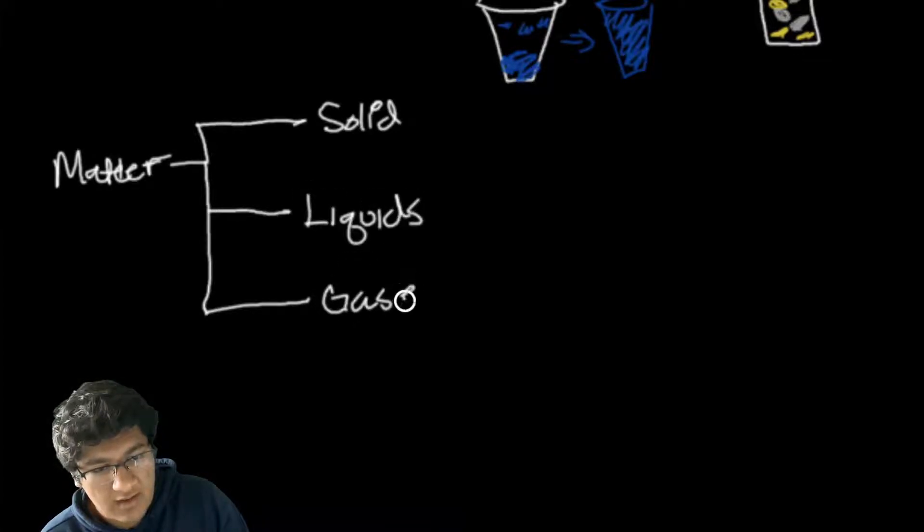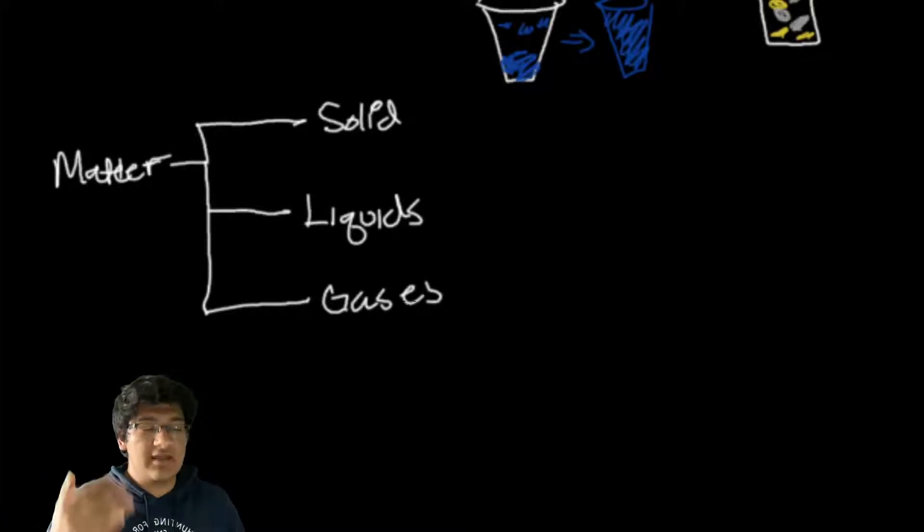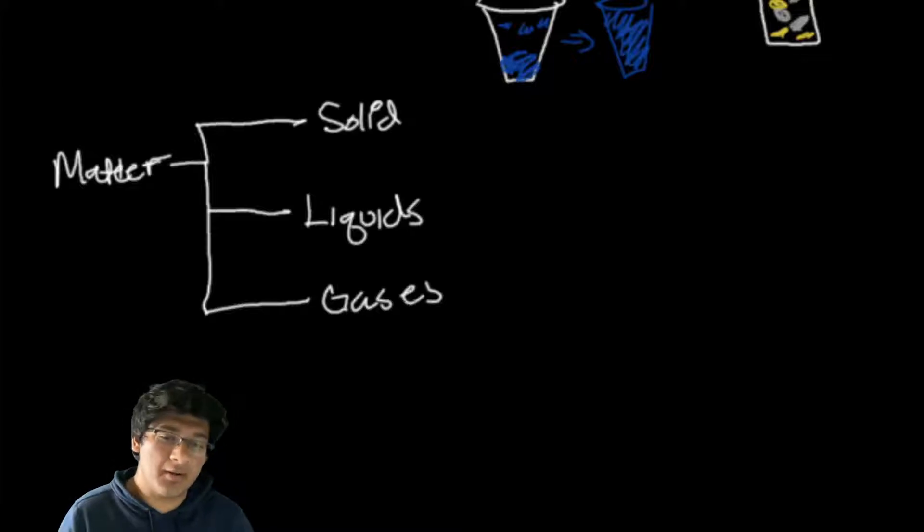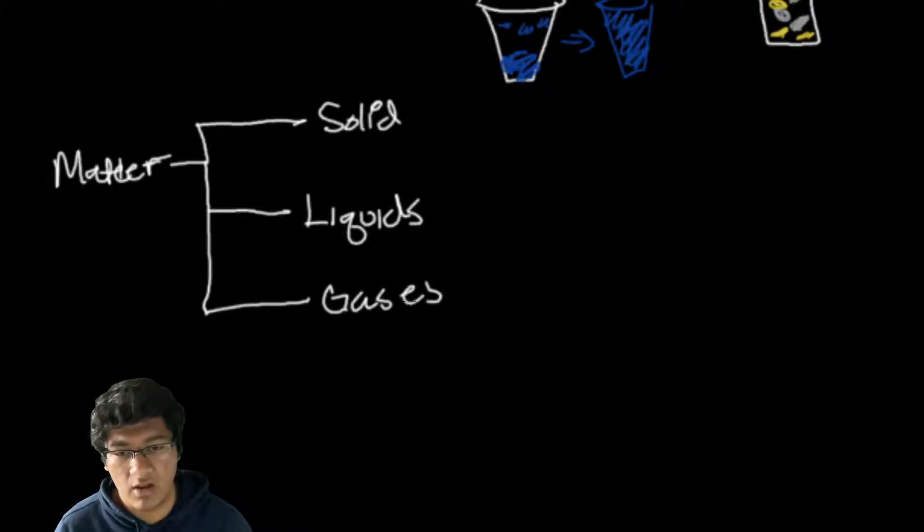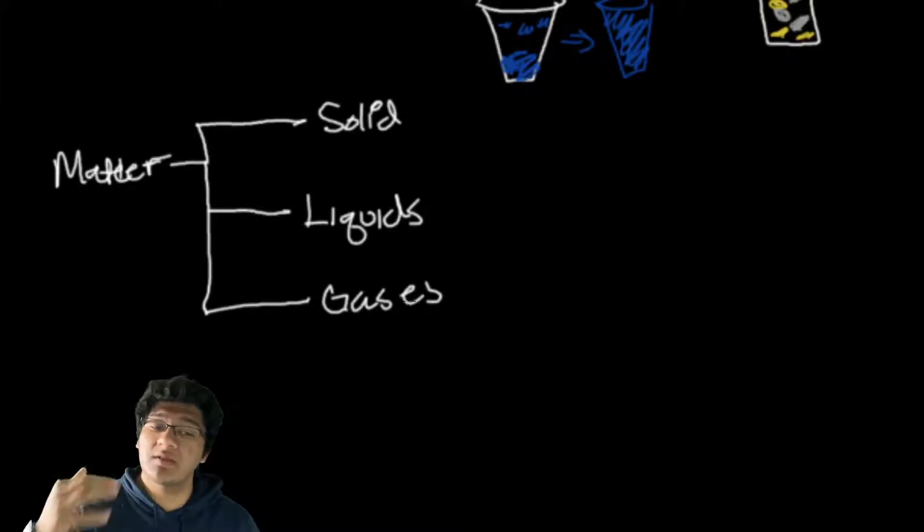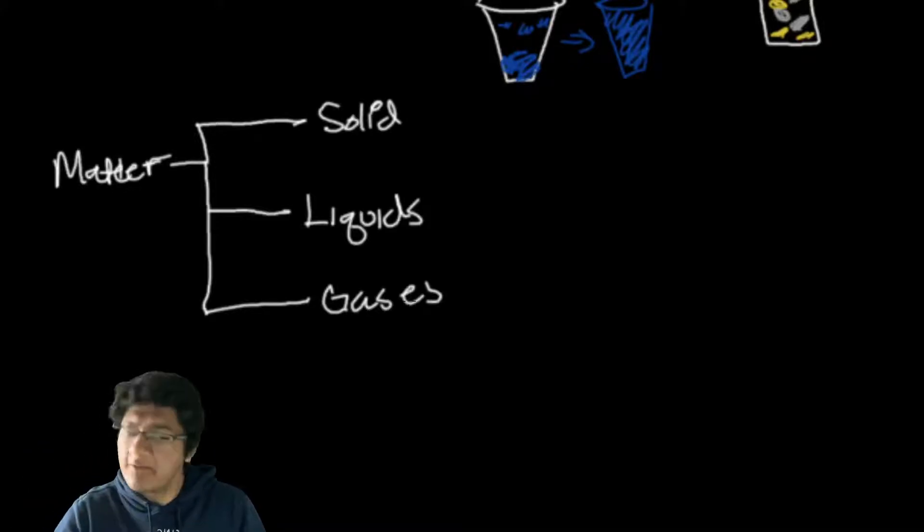There's a reason we say solids, liquids, and gases in that order. When we say it in a certain order, it means we're assessing the amount of kinetic energy in that state of matter. Solid has the least amount of kinetic energy, liquids have a medium amount, and gases have the most amount of kinetic energy.